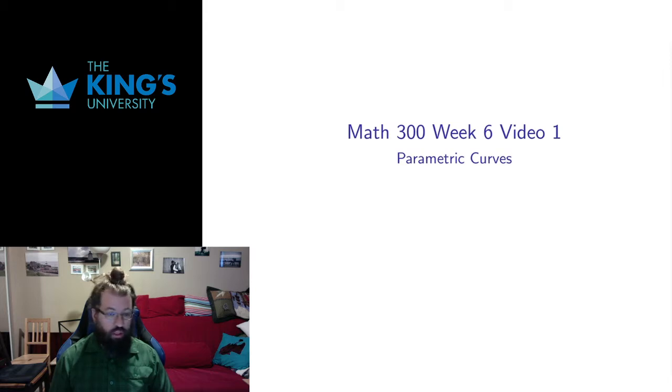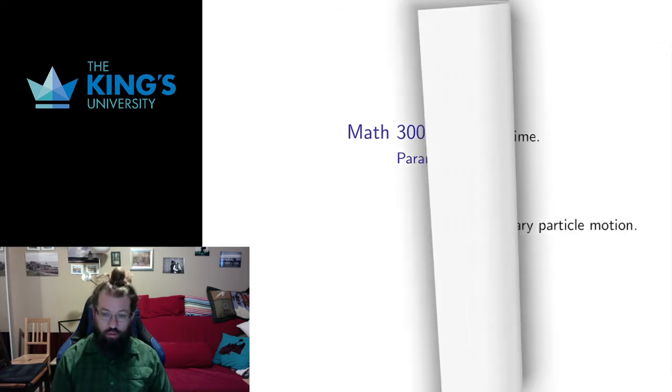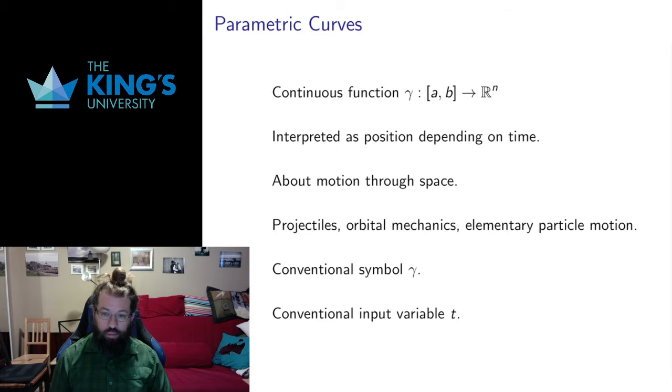Here we're going to give an interpretation for those vector-valued functions. That's going to be the major interpretation that we're going to work with in this course, and that interpretation is a parametric curve. So a parametric curve is a vector-valued function. It starts on some interval in the real number line and outputs a vector. It has to be continuous, so we're not going to consider discontinuous functions. And we interpret it as position depending on time.